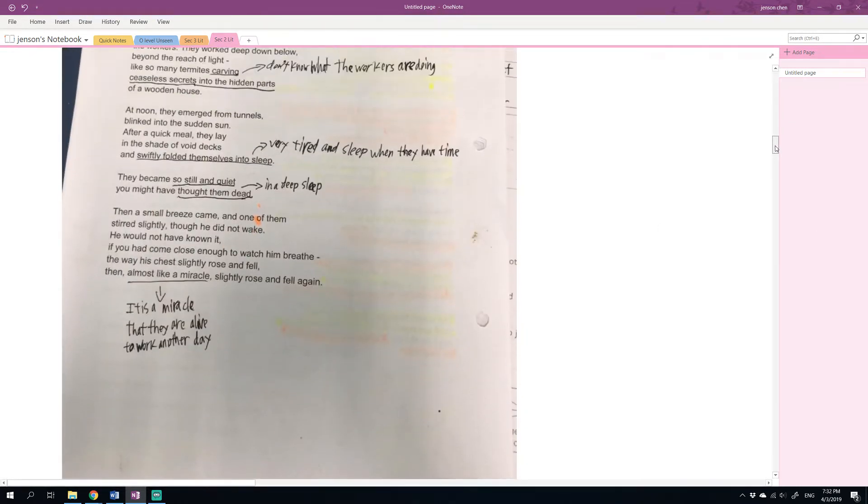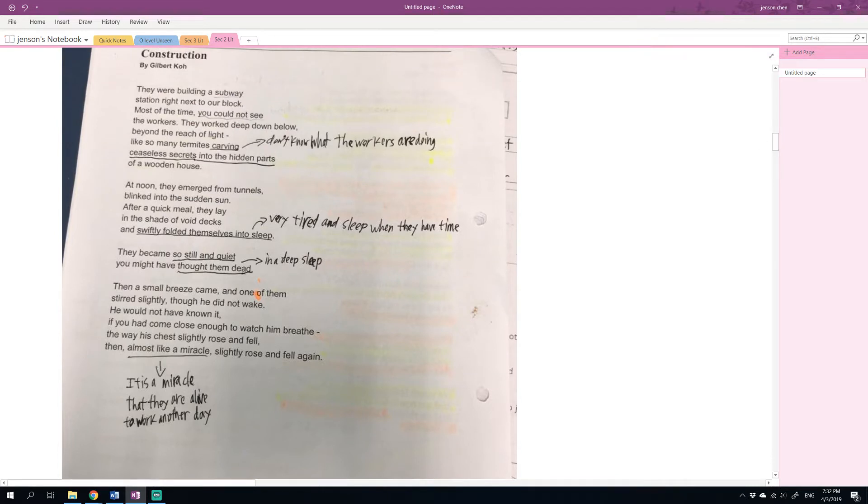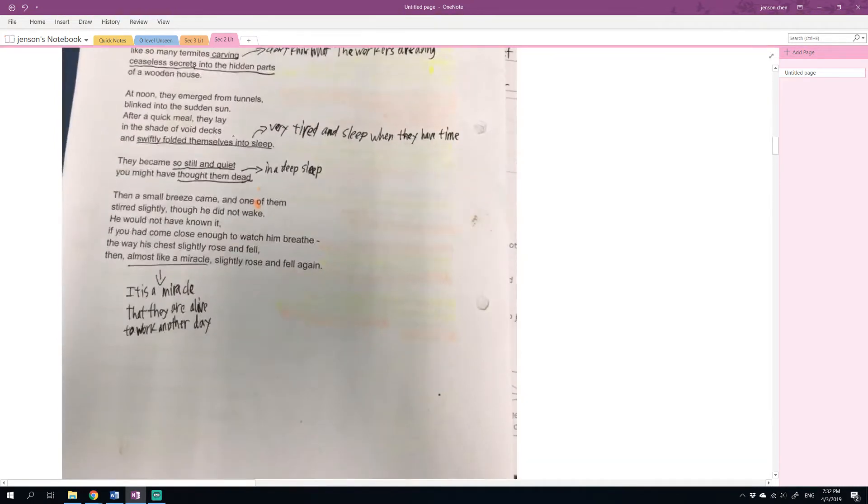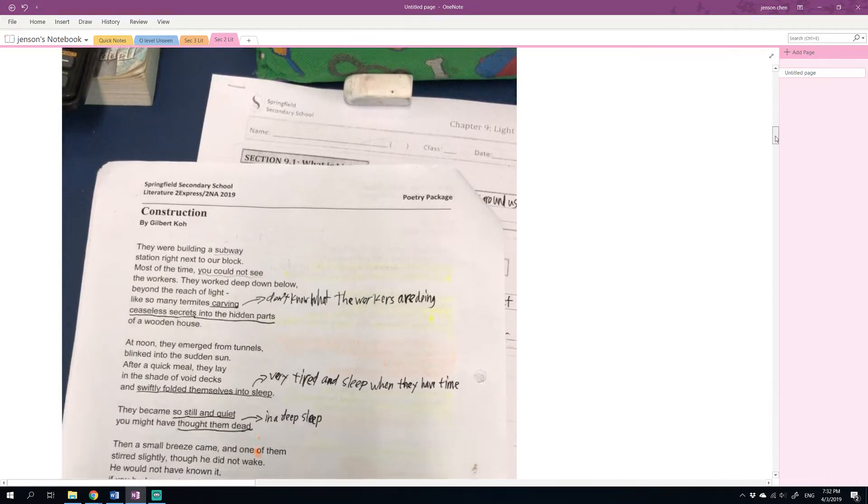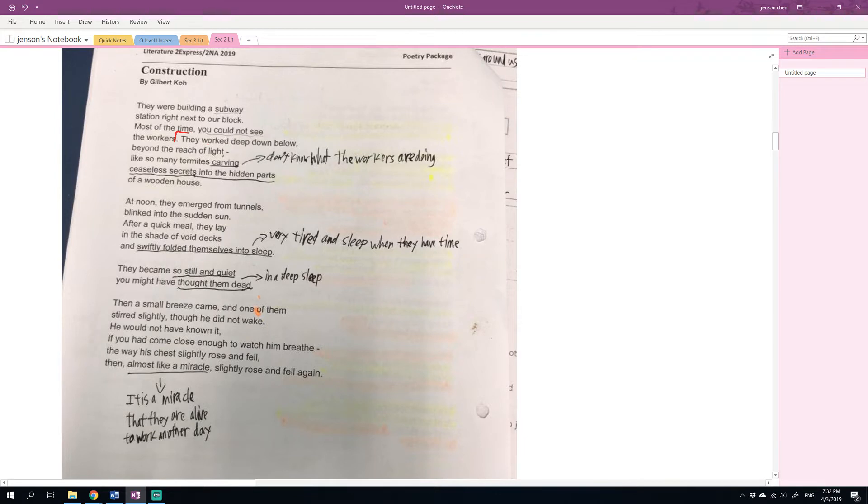I don't know what the workers are doing. I think this part is pretty obvious. Them working below - basically they are tunneling. And I can tell from the fact that they are building a subway, which is, as some of you asked, MRT. MRT is a brand for the form of transport which we use, which is known as a subway. So that's what the workers are doing. They are being compared to termites that are carving. There's a comparison being made here.